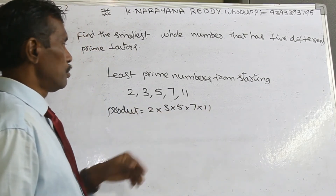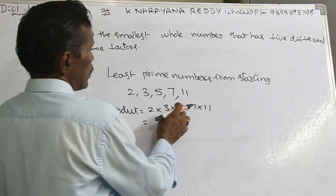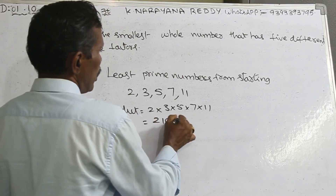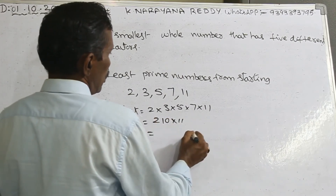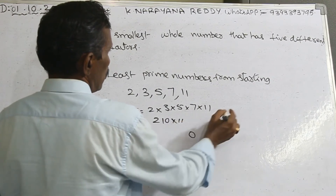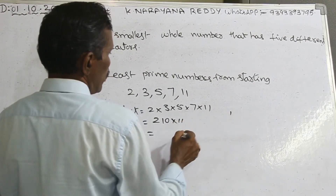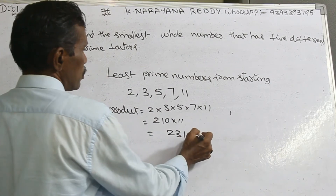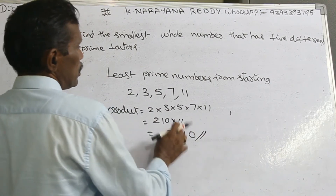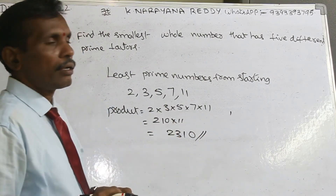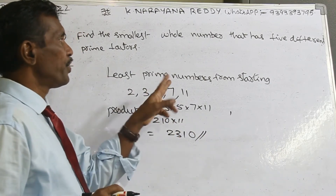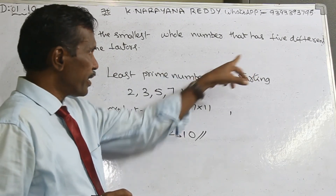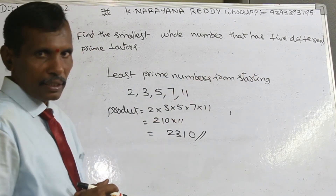What is the product? 2 times 3 is 6, times 5 is 30, times 7 is 210, times 11 is 2310. This is the least whole number that has 5 different prime factors.